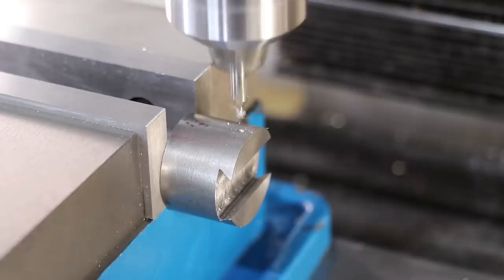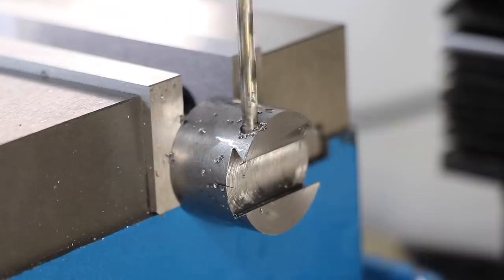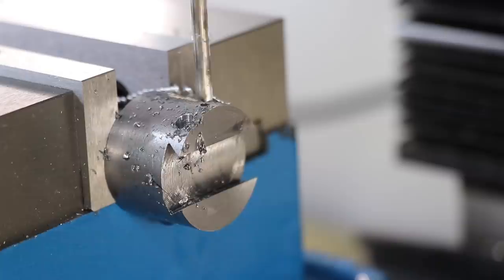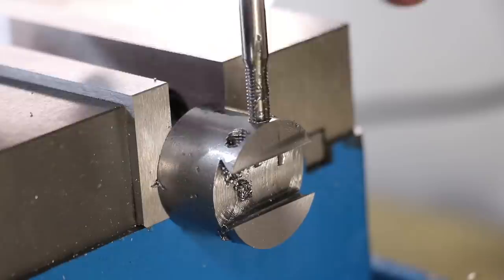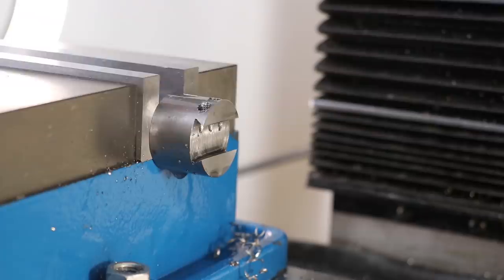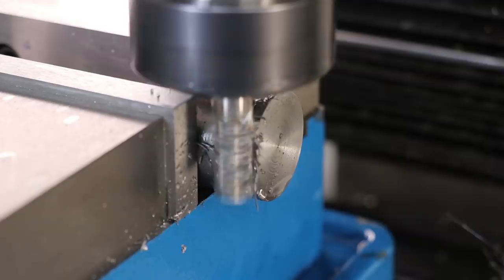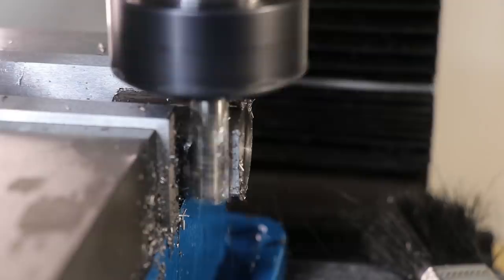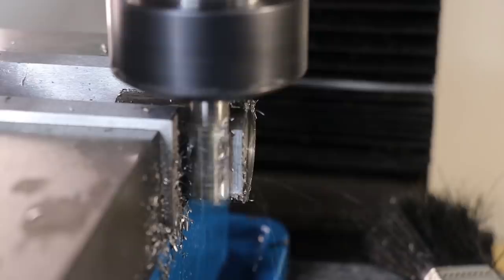Next I'll come in with an end mill and machine two flats on each side. This cut is really pushing the rigidity of the mill to the limit, but eventually taking light cuts I got a pretty good result.